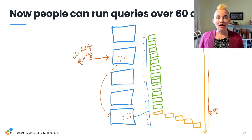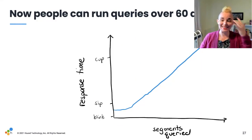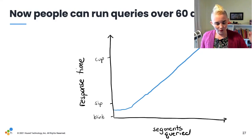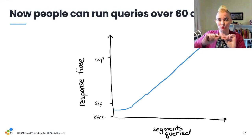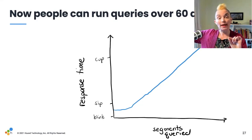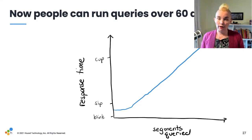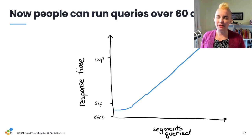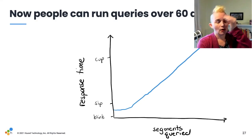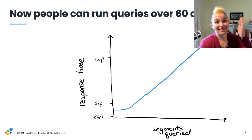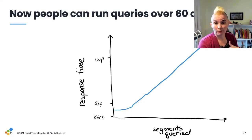Now people can run queries over 60 days worth of data — hooray. Oh no. Wait a minute. 60 days is a lot. As soon as you hit S3, the query time grows at least linearly with the number of segments to download. Query the last few minutes? Take a sip of coffee. Query the last few days? A couple sips. 60 days? We had to change our maximum query timeout to an hour. That's way beyond a cup of coffee. That was not okay.